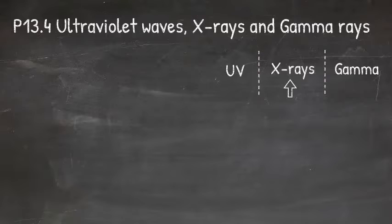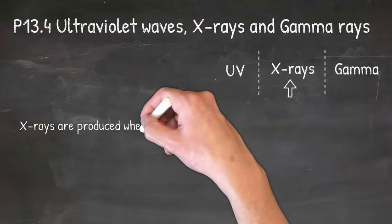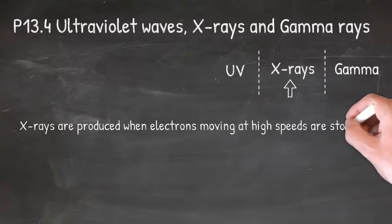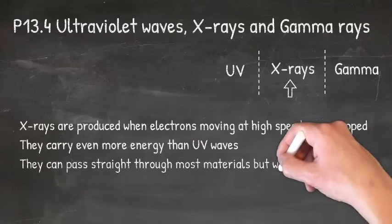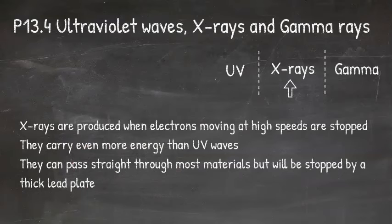Now let's move on to X-rays. X-rays are produced when electrons moving at high speeds are stopped. They carry even more energy than UV waves and they can pass straight through most materials but will be stopped by a thick lead plate.